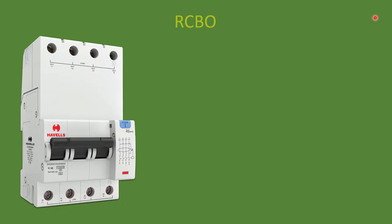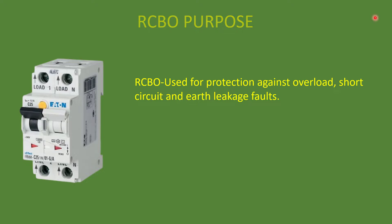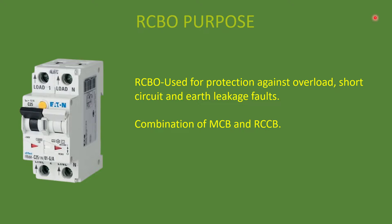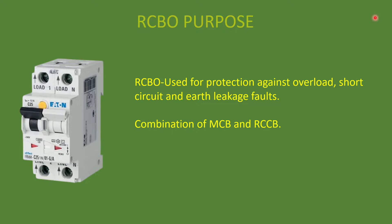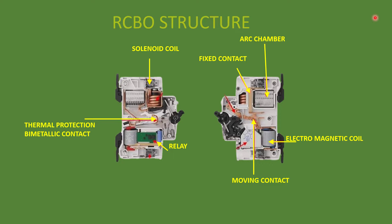The next type of circuit breaker is RCBO — the full form is Residual Current Circuit Breaker with Overcurrent protection. It is normally used in the range of 6 to 100 amp circuits. RCBO provides protection against overload, short circuit, and earth leakage faults — it is a combination of MCB and RCCB.